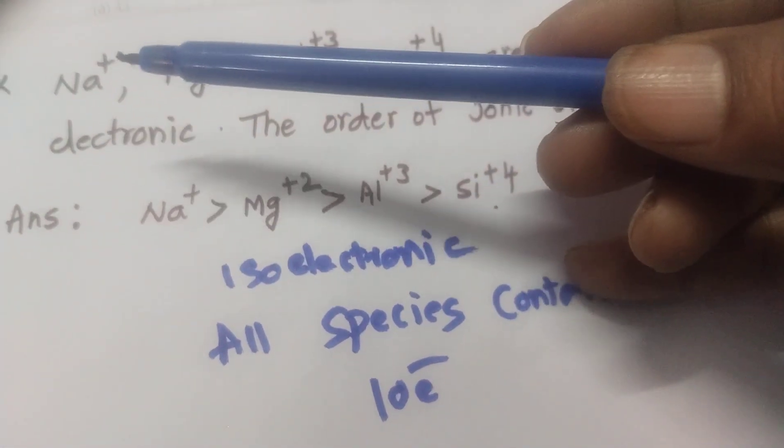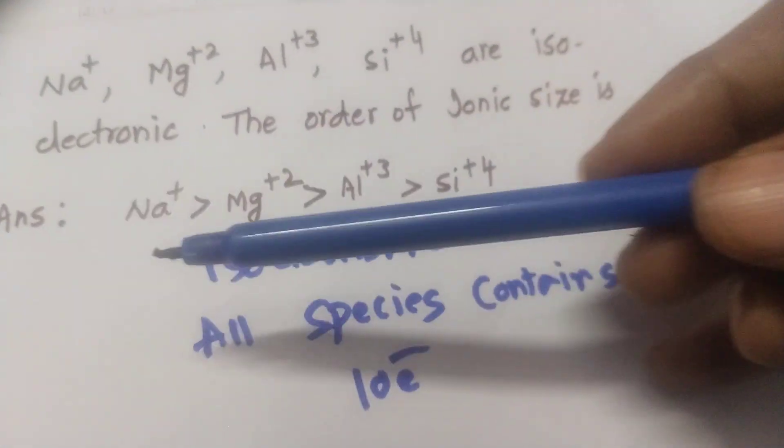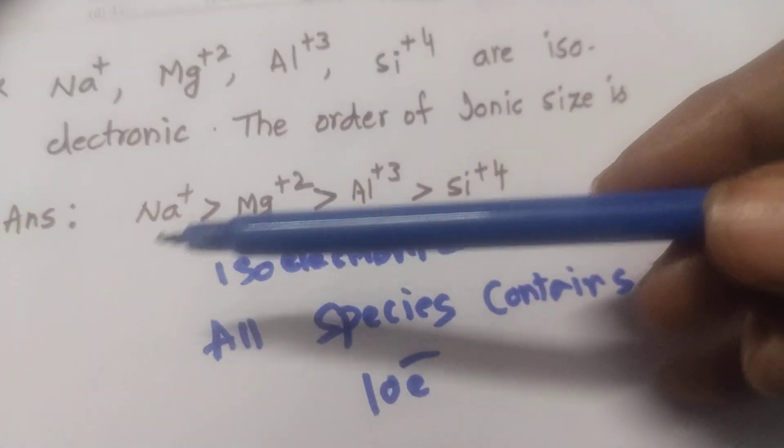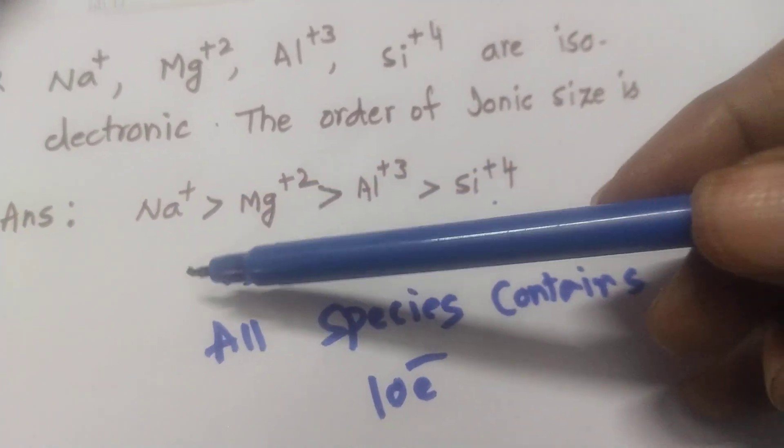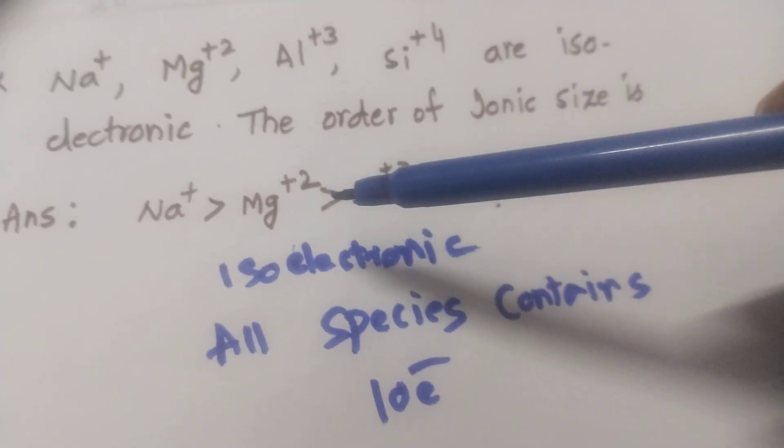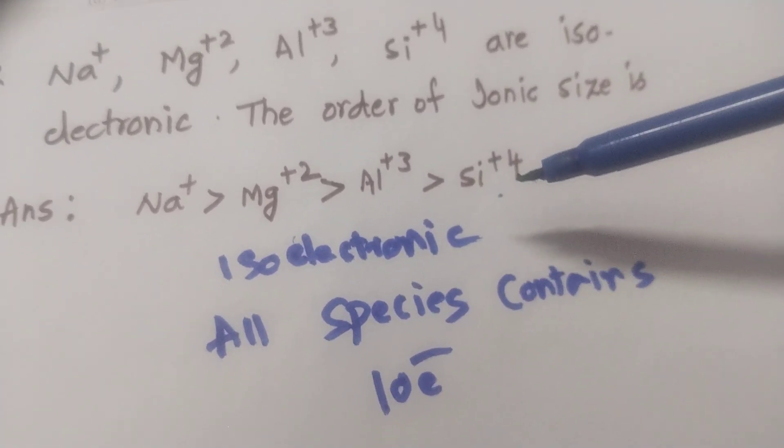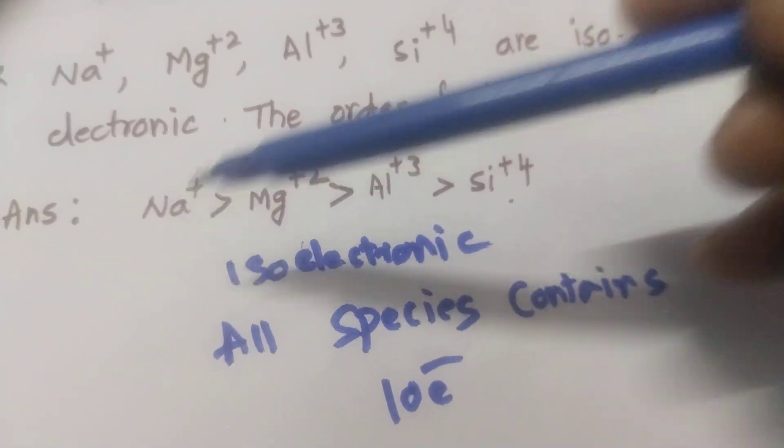So now I can say plus 1, here plus 2, here plus 3, here plus 4. So the order of the ionic size is sodium plus is bigger than Mg+2, Mg+2 bigger than Al+3, Al+3 bigger than Si+4. The lowest size is Si+4, biggest size is Na+.